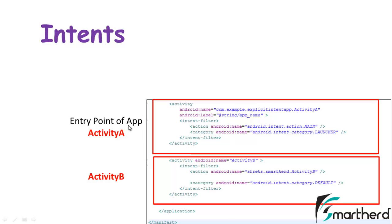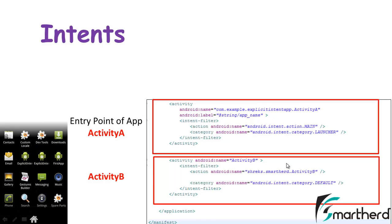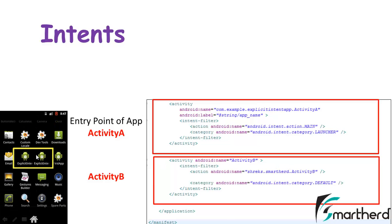So activity A is the entry point of the application. For activity B, I have written the category as category.DEFAULT and the action as shrakes.smarter.activityB. Now suppose you copy and paste action.MAIN and category.LAUNCHER into activity B's manifest entry. Then if you run the application in the emulator, you will see two identical application icons with the same name, because you have made both activities the entry point of the application.